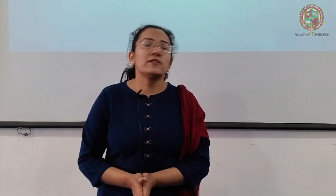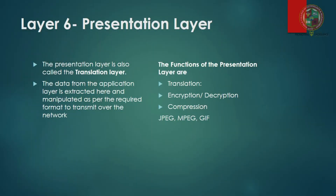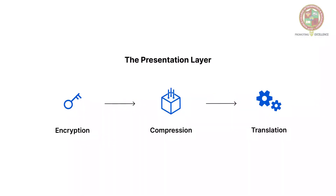Layer six is the presentation layer, also known as the translation layer, because it translates data sent by the sender and received by the receiver. It is used to compress the data into a shorter or larger format as required. It is also used to encrypt and decrypt data using keys provided by the sender or user.